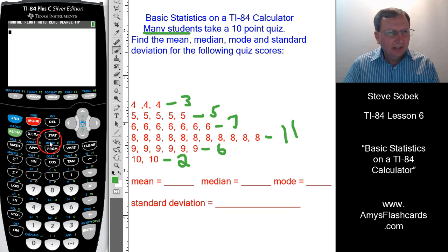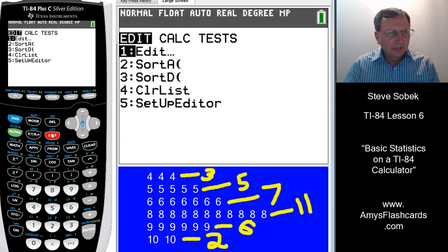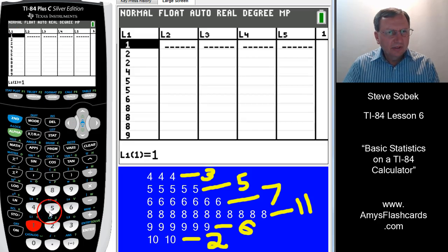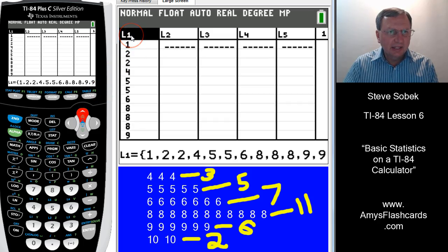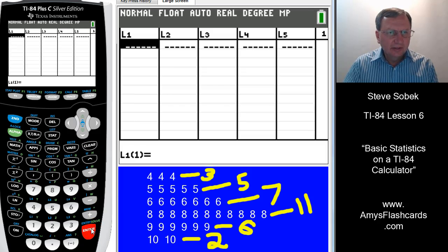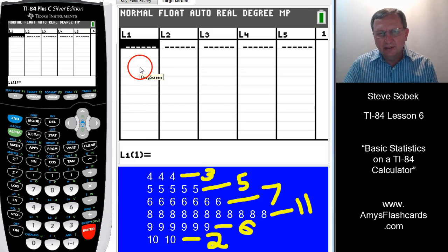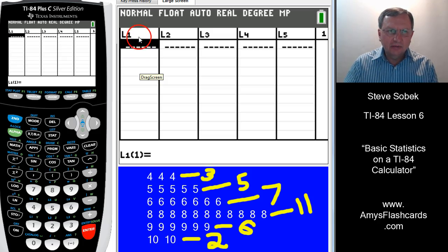Over here on the calculator, we're going to click on the stat button again. And we're going to edit, choose number one. Let me just show you how to clear out an entire list, rather than hitting the delete key so many times. Hit your up arrow key so that the name of the list is highlighted. Hit the clear button, and then hit enter. And that is a quick way. In some situations, you might have hundreds of values in that list, and that's certainly a faster way to clear the list.